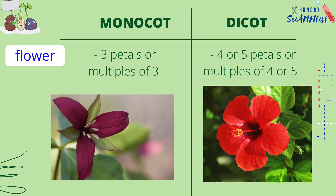The flower of a monocot plant has three petals or multiples of three petals. The flower of a dicot plant has four or five petals or multiples of four or five.